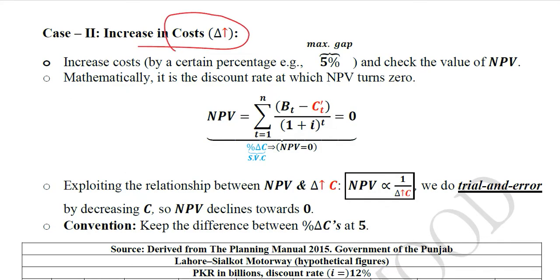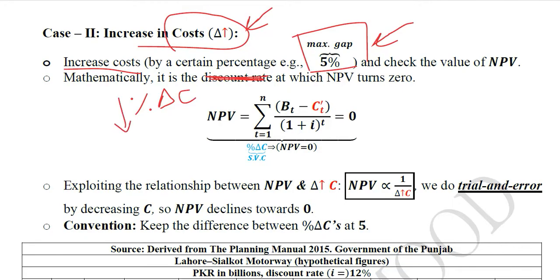We start with the assumption that costs are unexpectedly increasing. For our analysis we usually use a 5% change, which is the maximum suggested gap, because we want to do interpolation and imprecision will increase to a dangerous level beyond that. So we avoid any value greater than 5%. We increase the cost by 5% and then measure its effect on the NPV — how it changes the NPV and perhaps takes it closer to zero. Mathematically, this unexpected percentage change in cost as an increase is to be observed, and new costs would be used.